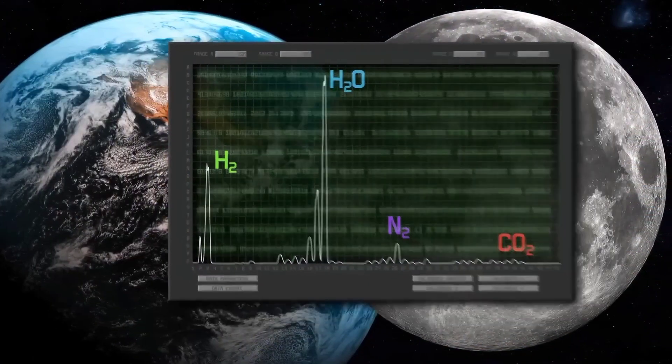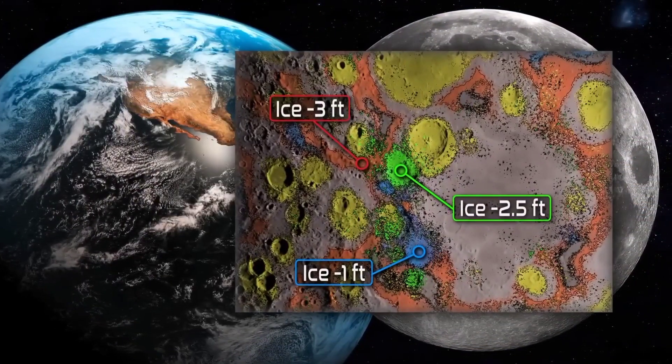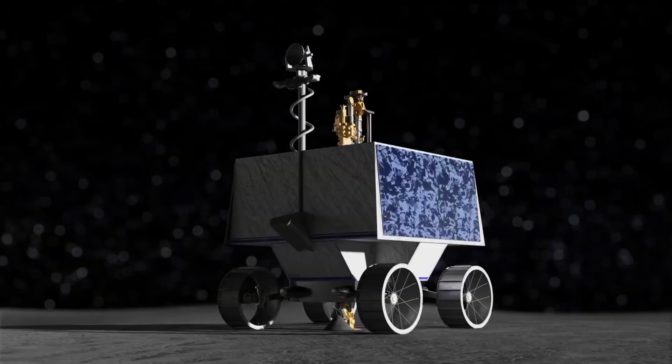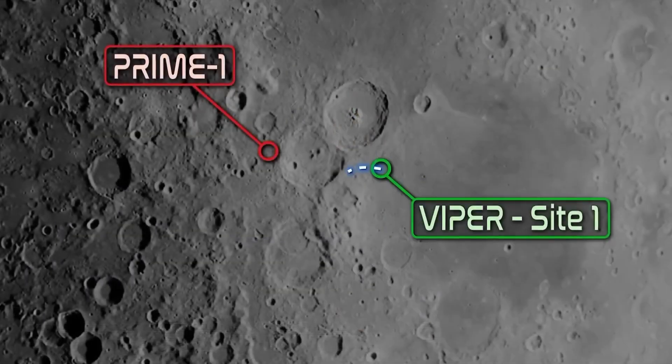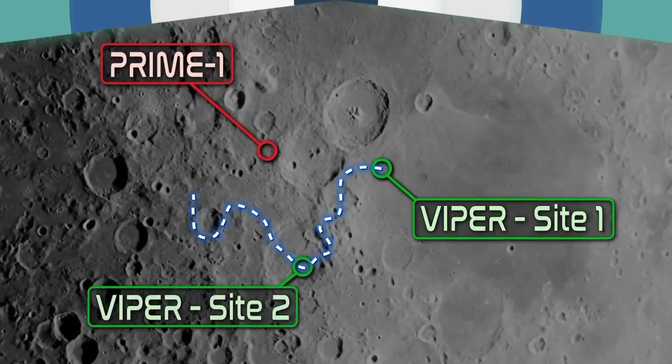The objective of PRIME-1 is to inform NASA's plans for mining resources on the lunar surface, as well as mission operations for a future NASA lunar rover mission called VIPER.